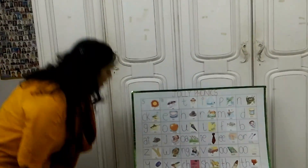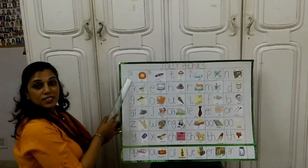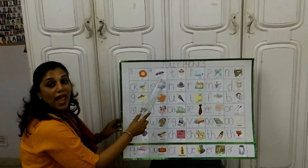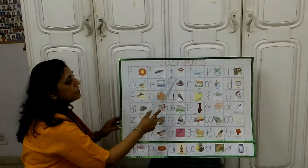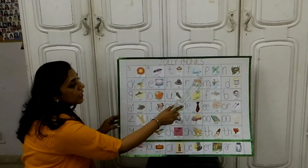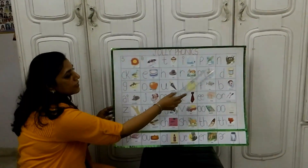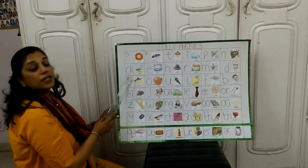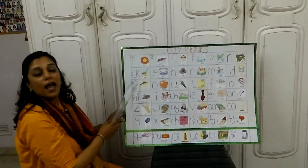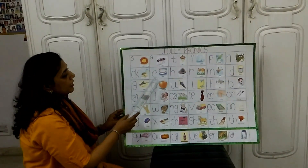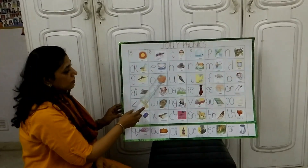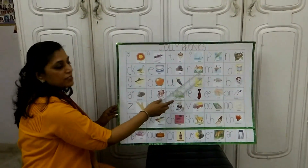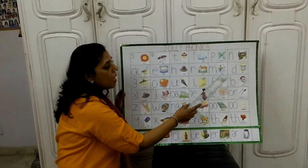S as in sun. S as in ant. T as in ta. I as in igloo. P as in parrot. N as in nest. K as in duck. E as in egg. H as in hat. R as in rabbit. M as in map.